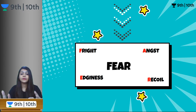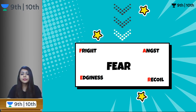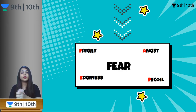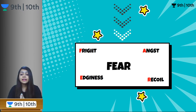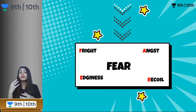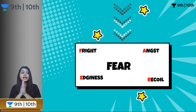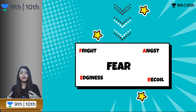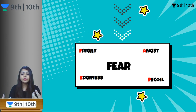Next in the list is FEAR. Going towards the direction of fear: F for fright — when do you feel frightened? When you feel fearful. E for edginess — the tension you have when you feel anxiety, when you are fearful of an event. A for angst — again, when you experience fear. R for recoil — when you pull yourself back because you are fearful. The way a snake recoils itself when it wants to go back.